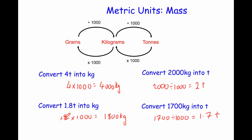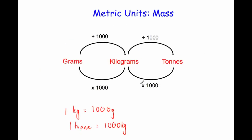The main things to remember are: 1 tonne equals 1,000 kilograms, and 1 kilogram equals 1,000 grams.